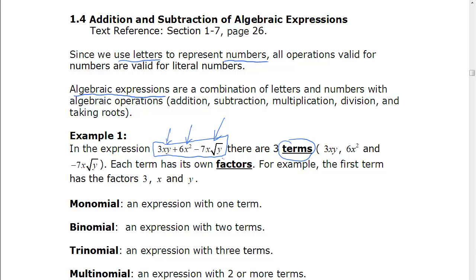There's also a word here called factors. Factors, those are the things that are multiplied or divided. The factors in the first term here would be the 3, the x, and the y because we're going to multiply all those together.